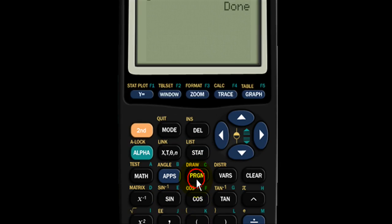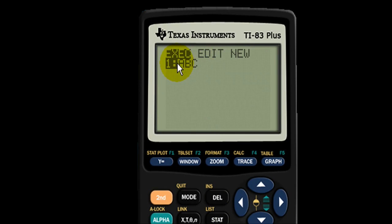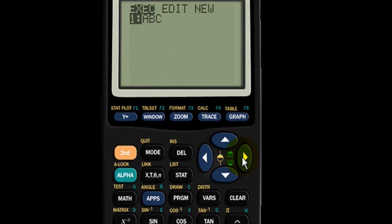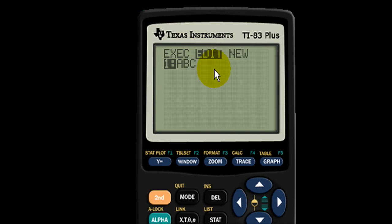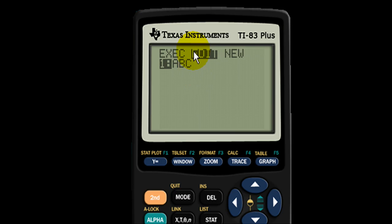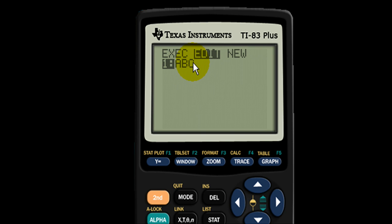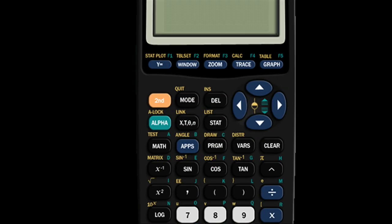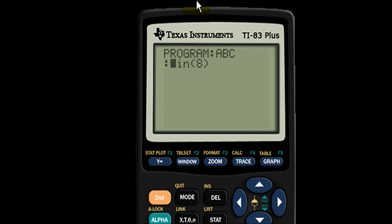Go back to program and there's no asterisk next to the program you created or the information that you stored in a program. Hit the right key once to view your equation that you couldn't memorize in three hours. Go to one and there it is. Program ABC sine of eight.